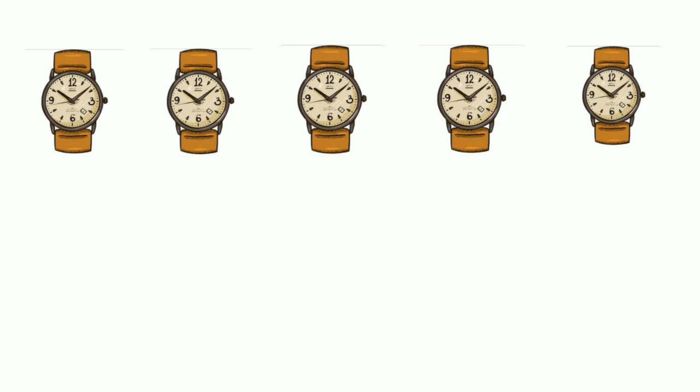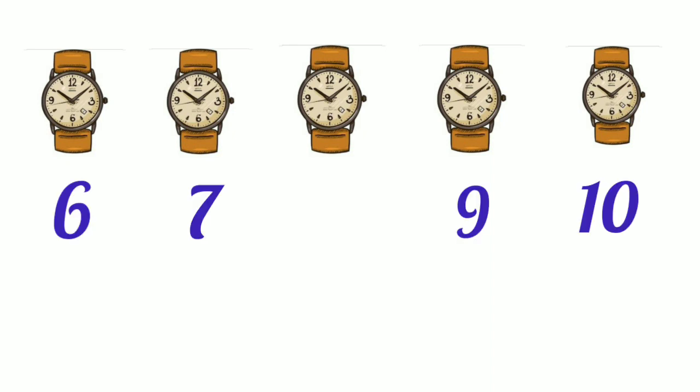What's the picture here? It's a watch. Shall we count the watches? 1, 2, 3, 4, 5 — all together 5 watches. Now look at the numbers below: 6, after 6 is 7, after 7 a number is missing, then 9 and 10. So: 6, 7, a number is missing, then 9 and 10.